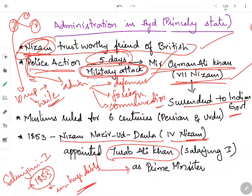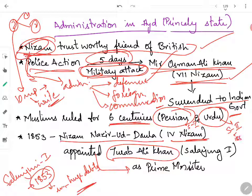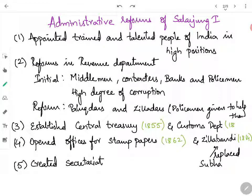Muslims ruled India for 6 centuries. Initially, Persian was the official language, and then Urdu was made the official language. During Salar Jung I, Persian was still the official language. Urdu was made the official language by Salar Jung II in 1884.